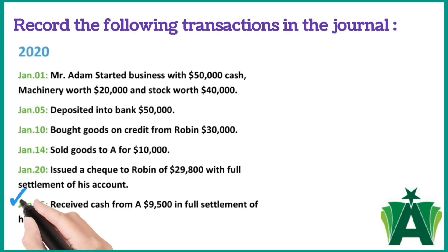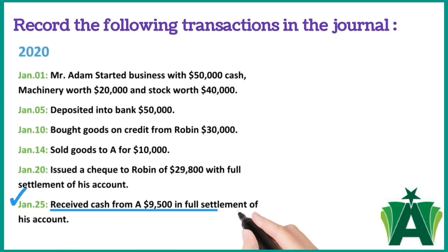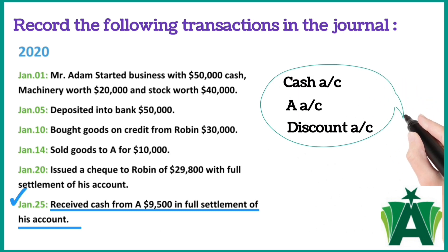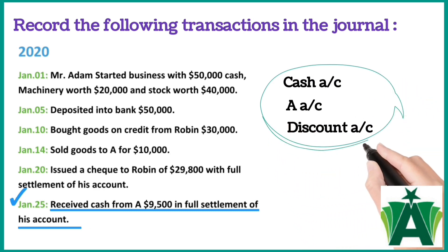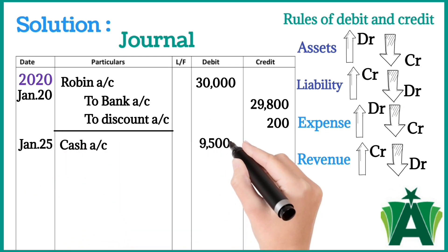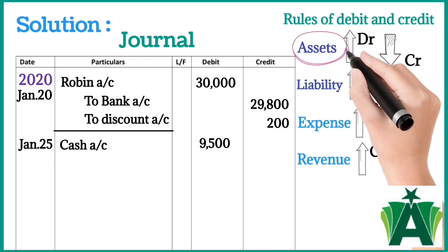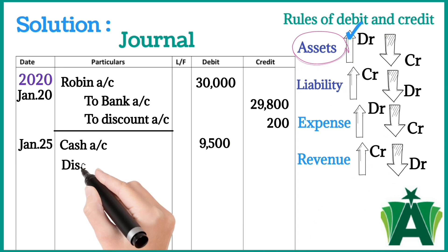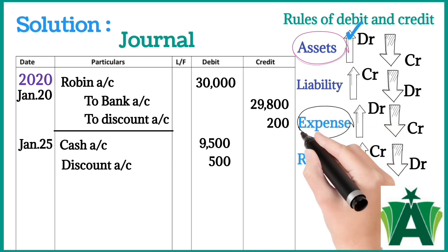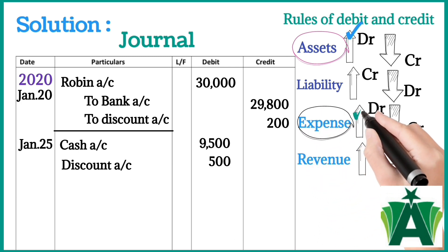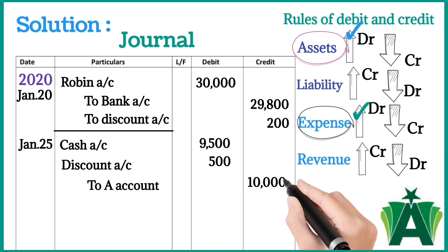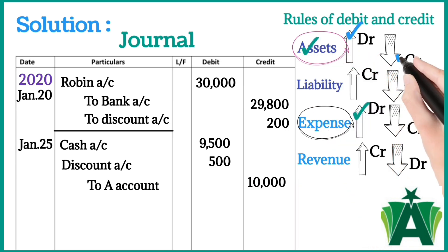January 25: Received cash from A of $9,500 in full settlement of his account. Here three accounts are involved: cash account, A account, and discount account. Cash account debit with $9,500 — reason: cash is an asset and increases in business. Discount account debit with $500 — reason: discount is allowed, its nature is an expense, increases in business. To A account credit with $10,000 — reason: A is a debtor, its nature is an asset and decreases in business.